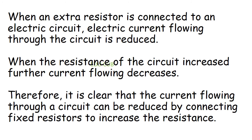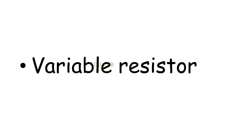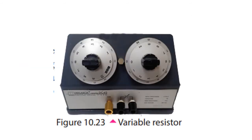When an extra resistor is connected to an electric circuit, the electric current flowing through the circuit is reduced. When the resistance of the circuit increases further, the current flowing decreases. Therefore, it is clear that the current flowing through the circuit can be reduced by connecting fixed resistors to increase the resistance.